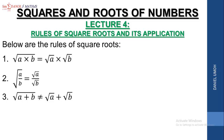The third rule says that the square root of a plus b is not the same thing as the square root of a plus the square root of b. The next rule says the square root of a minus b is not the same thing as the square root of a minus the square root of b. All these rules are provable, and in our lectures we are going to prove them so that you can understand and see how they are applicable.